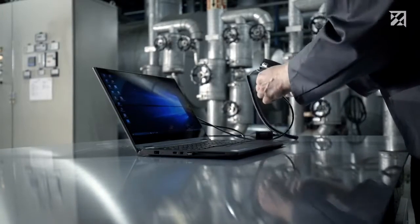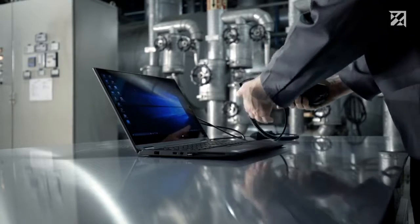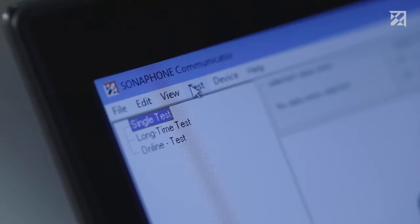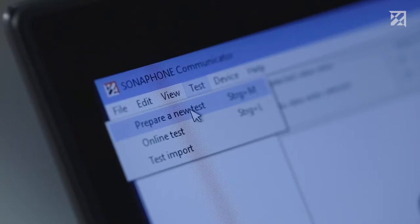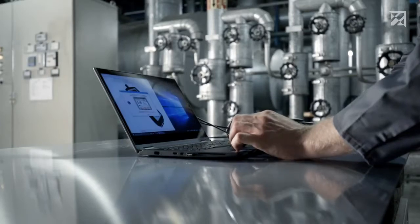An active route for the machine and system inspections can be created in advance on the PC using the software communicator. The data is transferred from the PC to the Sonophone E via the USB interface.